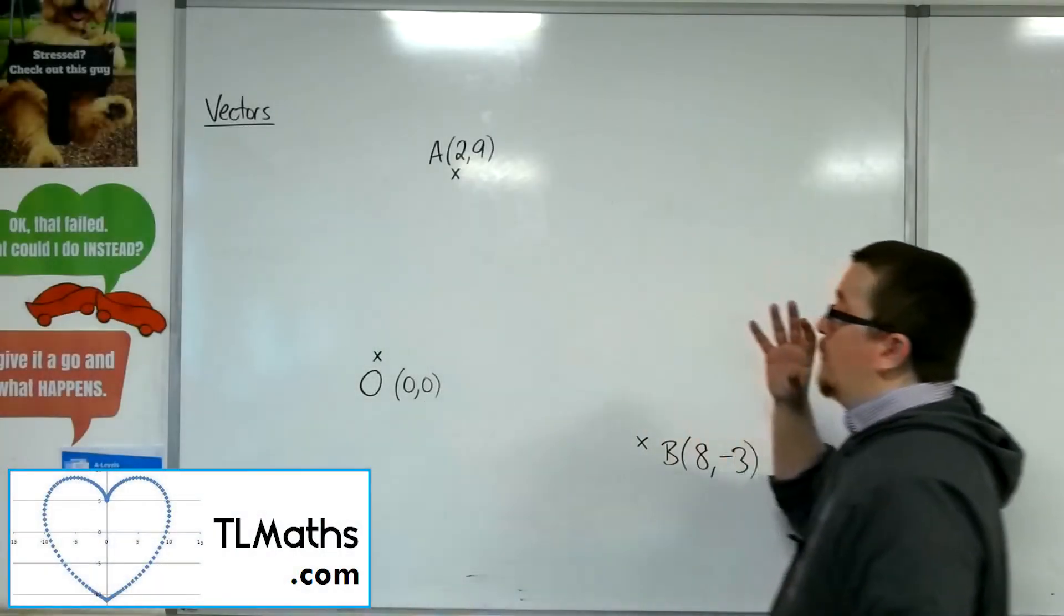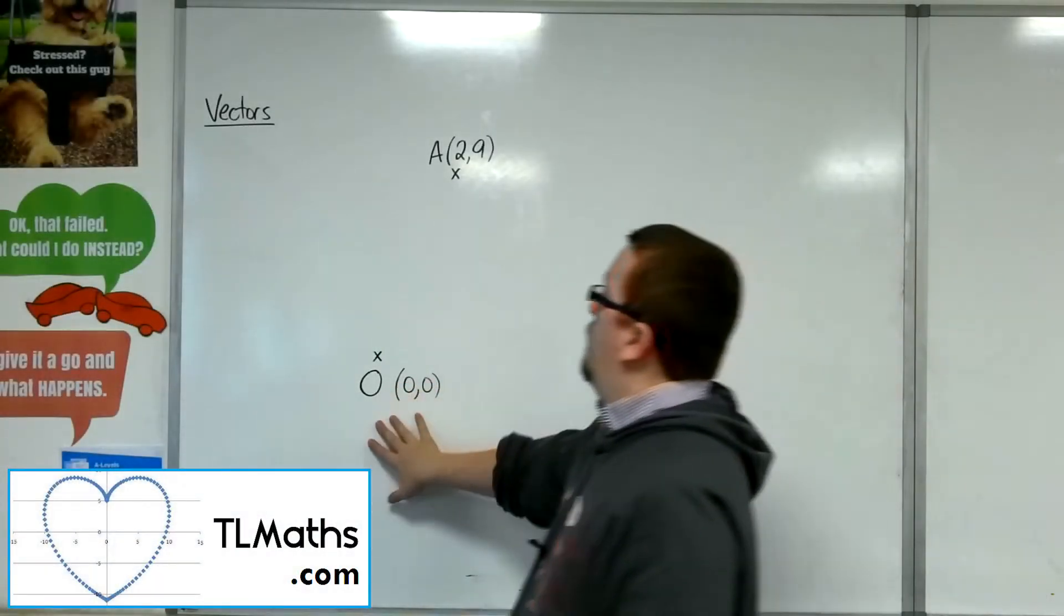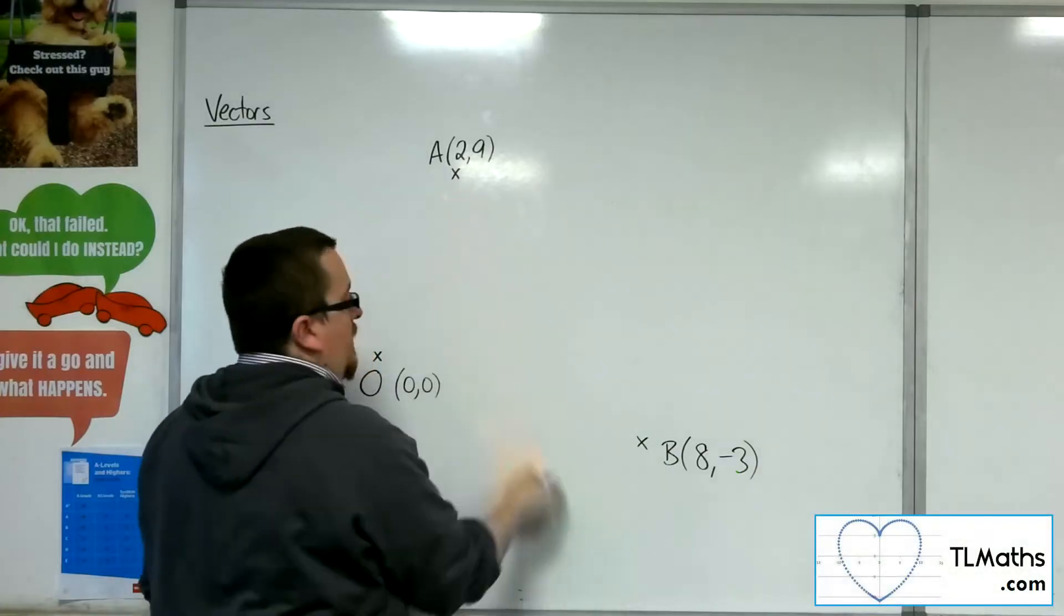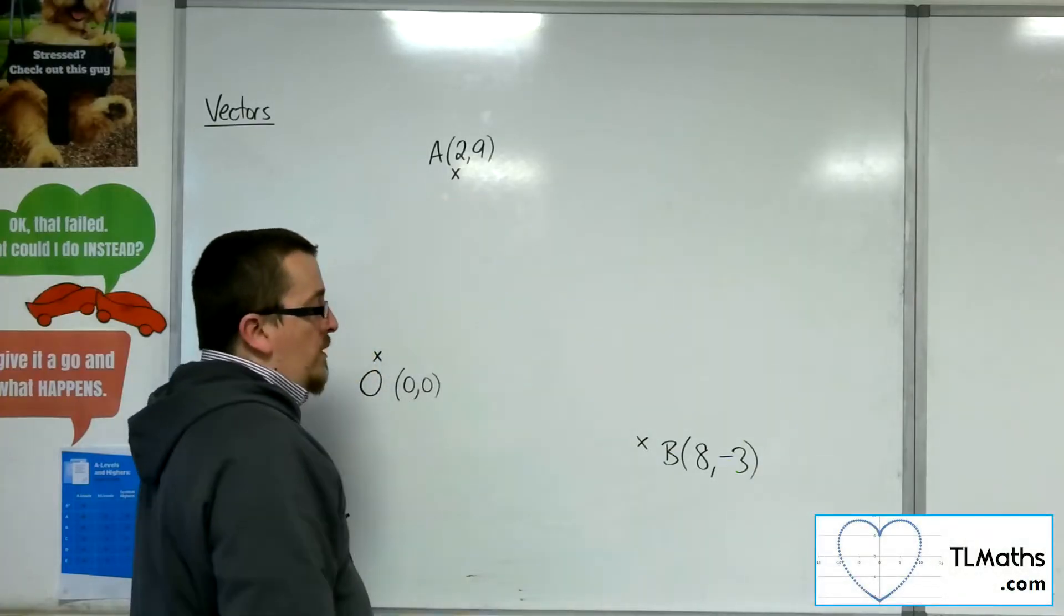Okay, so let's say I've got these three coordinates: the origin 0,0, A is 2,9, and B is 8,-3.